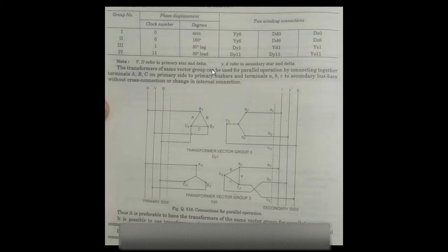These are star — primary and secondary star — with 0 phase displacement. The second group includes star-star 6, delta-delta 6, and delta-zigzag 6. The third group has 30 degree lag: delta-star 1, star-delta 1, and star-zigzag 1.